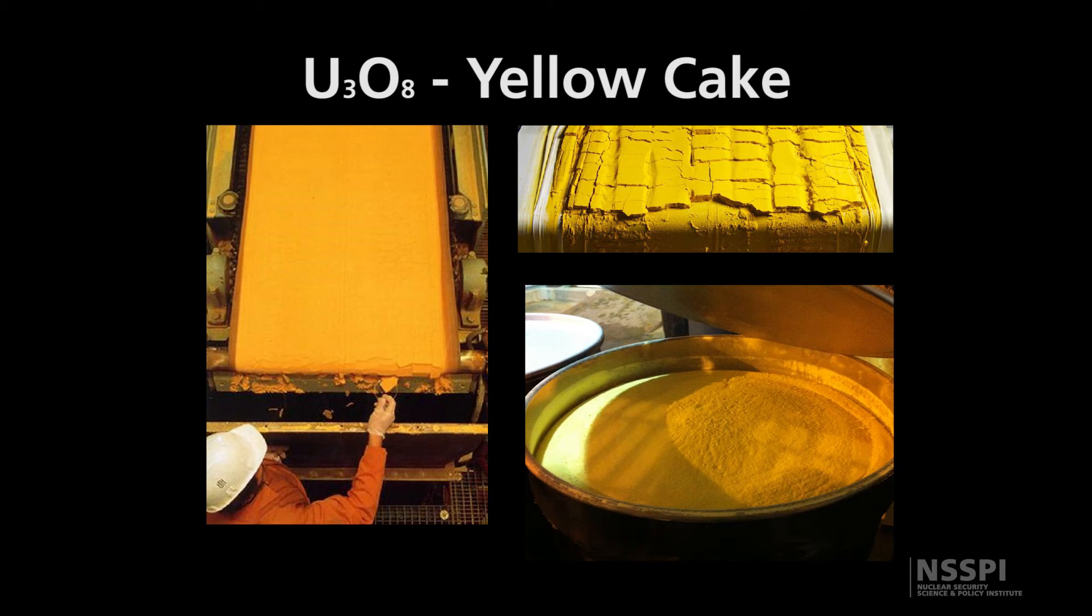It's a yellowish-orange color, and yellowcake itself is a solid powdery form that is fairly non-dangerous. As you can see, this individual isn't wearing any special protective clothing. He's just wearing a couple of plastic gloves, mostly just to keep the material from getting contaminated from him, not so much him from the material.